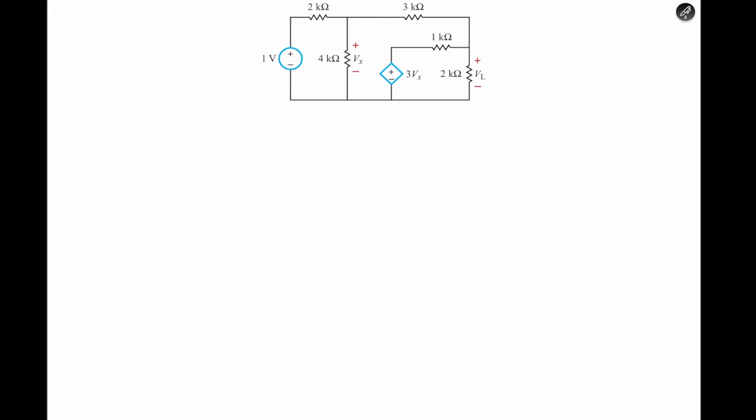Welcome back. This is Inc. And in today's problem, we're going to find VL and Vx. Vx is the voltage across the 4kohms resistor. Vl is the voltage across the 2kohms resistor. We see that we have a dependent and an independent voltage source in the following circuit.